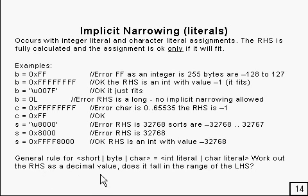The general rule for setting a type of short byte or char equal to either an integer or char literal, is to work out the right hand side as a decimal value. And ask, does it fall in the range of the left hand side? And if it does, then the assignment is fine and it will work. And if it doesn't, you get an error message from the compiler. And that's the general way that you work that out.